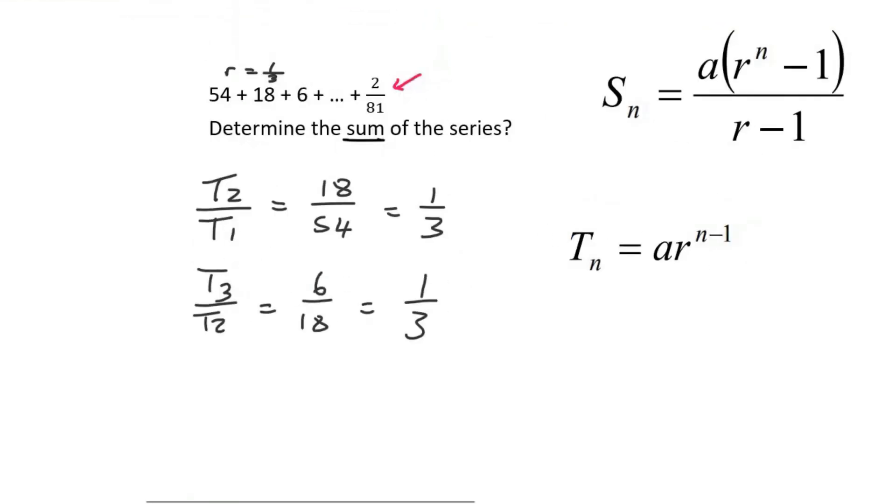So we can use the term formula. We know what the value of the term is, it's 2 over 81, but we don't know what term number it is. But if we could find that, then we know how many terms our sequence has. Now our ratio is a third to the n minus 1 like that.